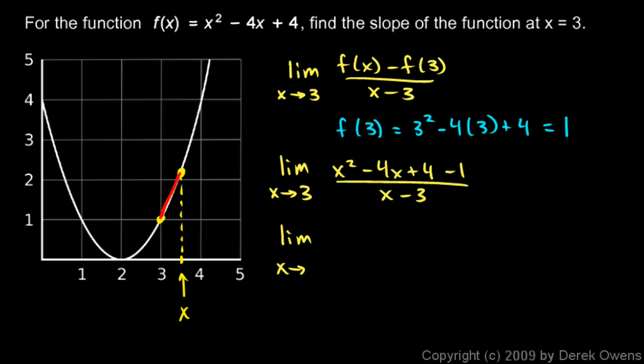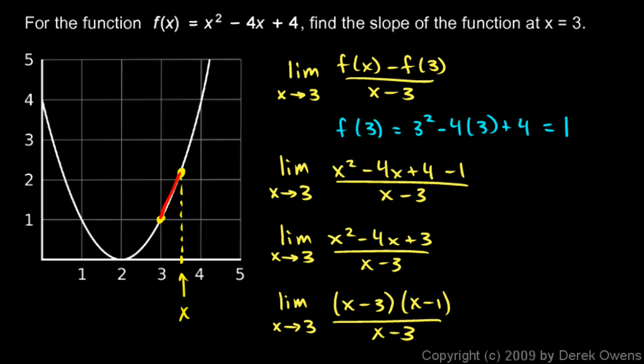The limit as x approaches 3. Well obviously the top here is just going to be x squared minus 4x plus 3 over x minus 3. And we can factor that. So we'll have the limit as x approaches 3 and this will factor as (x minus 3) times (x minus 1) over x minus 3.